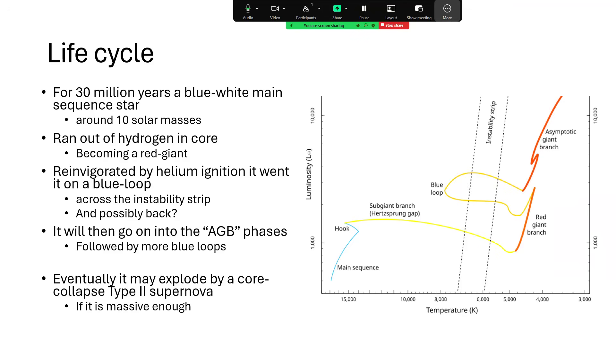Now in future, it's going to burn as an AGB star for a while, and then eventually the carbon and other elements will ignite in the center, and it'll take further small short blue loops, and go through the phases, building heavier and heavier elements up to possibly building an iron core, at which point it will suffer the core collapse and explode as a type 2 supernova.